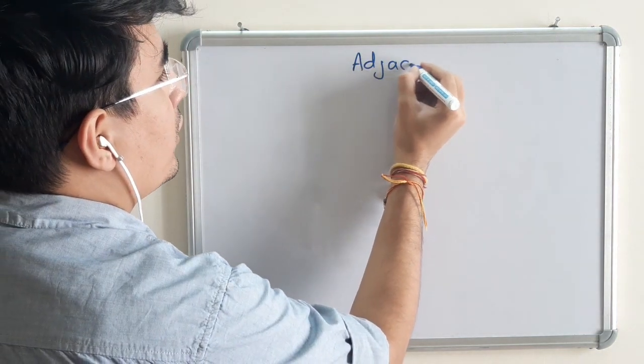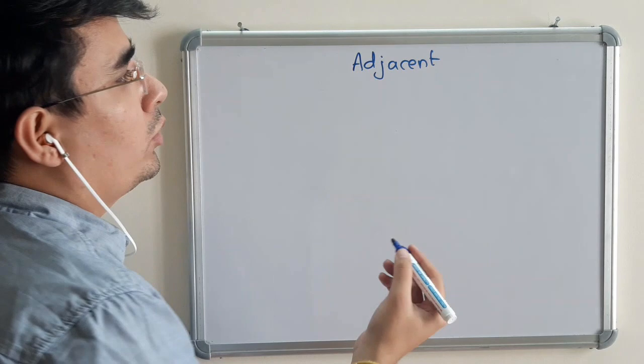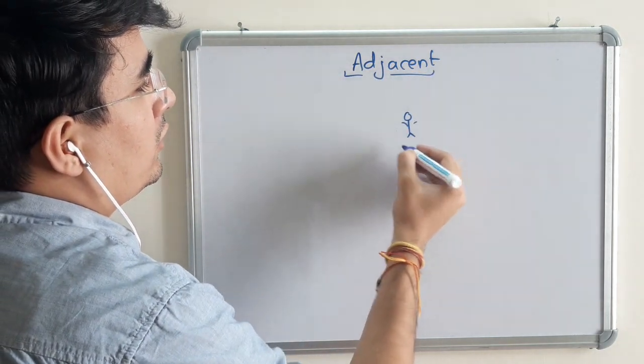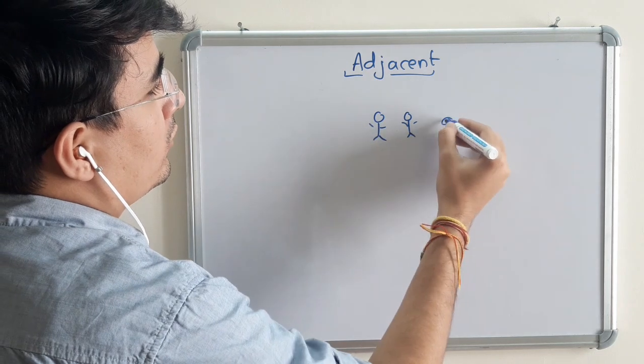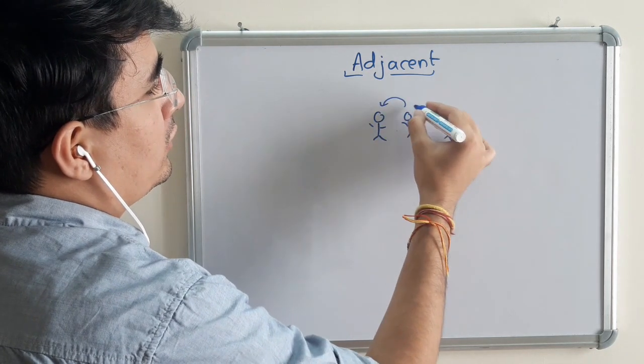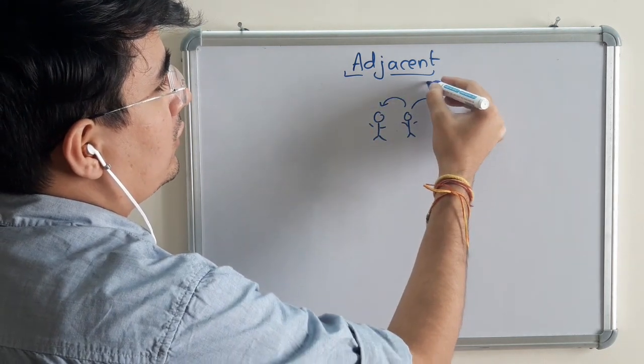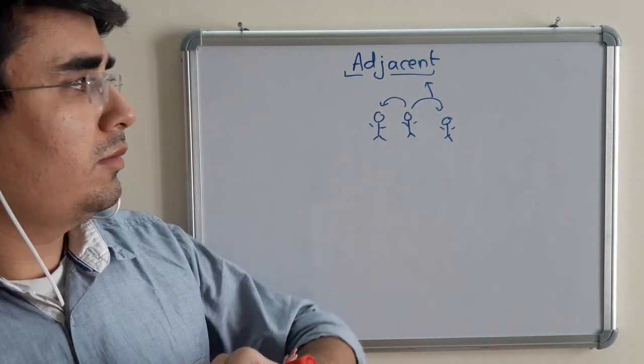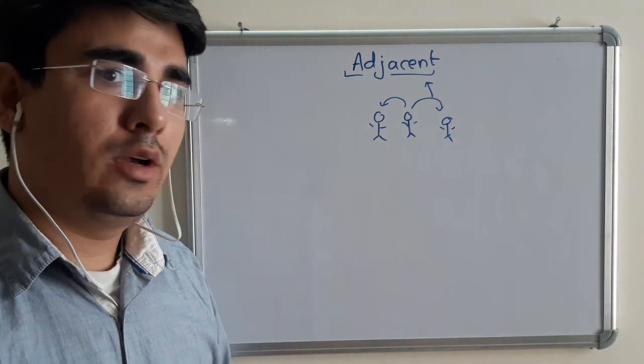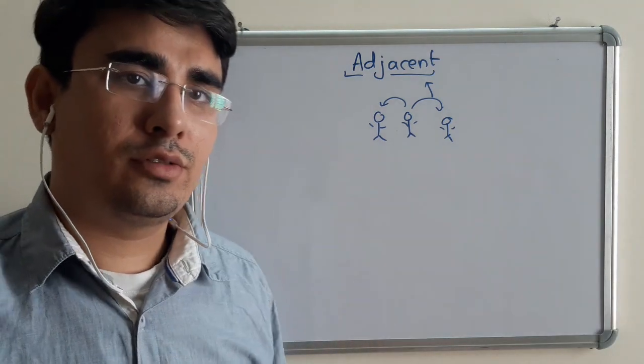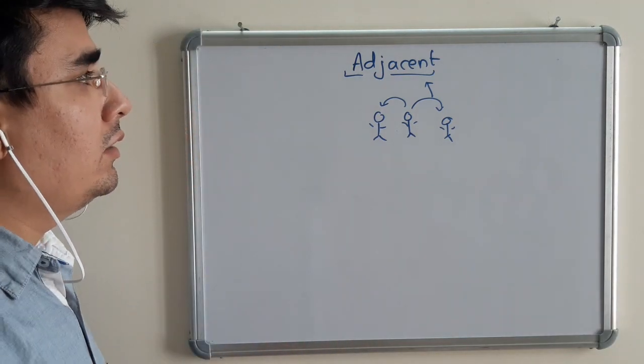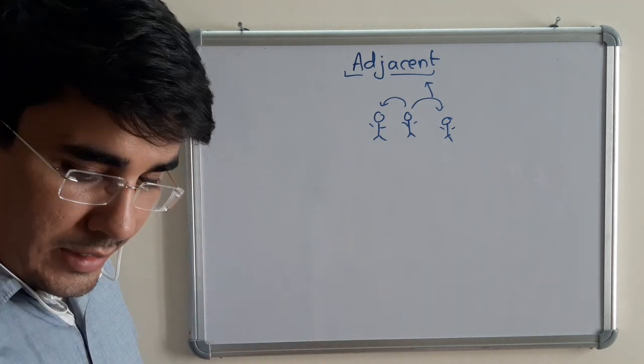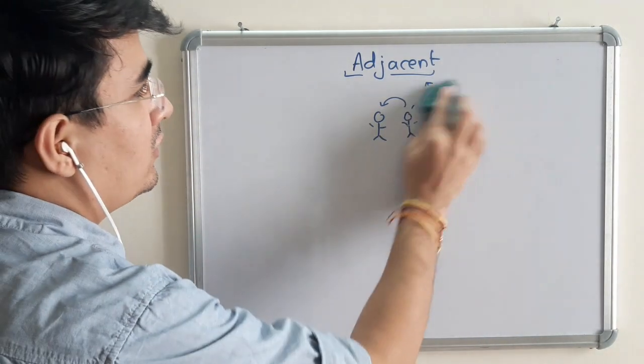Adjacent. What do you mean by the term adjacent? I remember sitting next to a few people. The person sitting next to you is known as adjacent. The person on the right side or on the left side. Adjacent can have different meanings in different contexts, so don't take it literally.